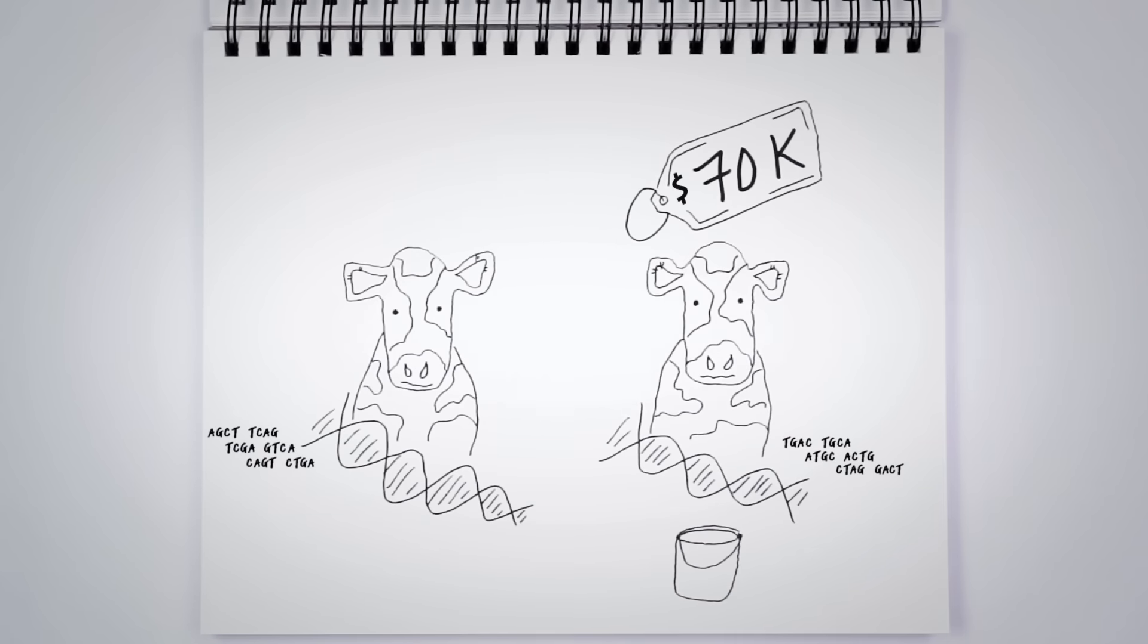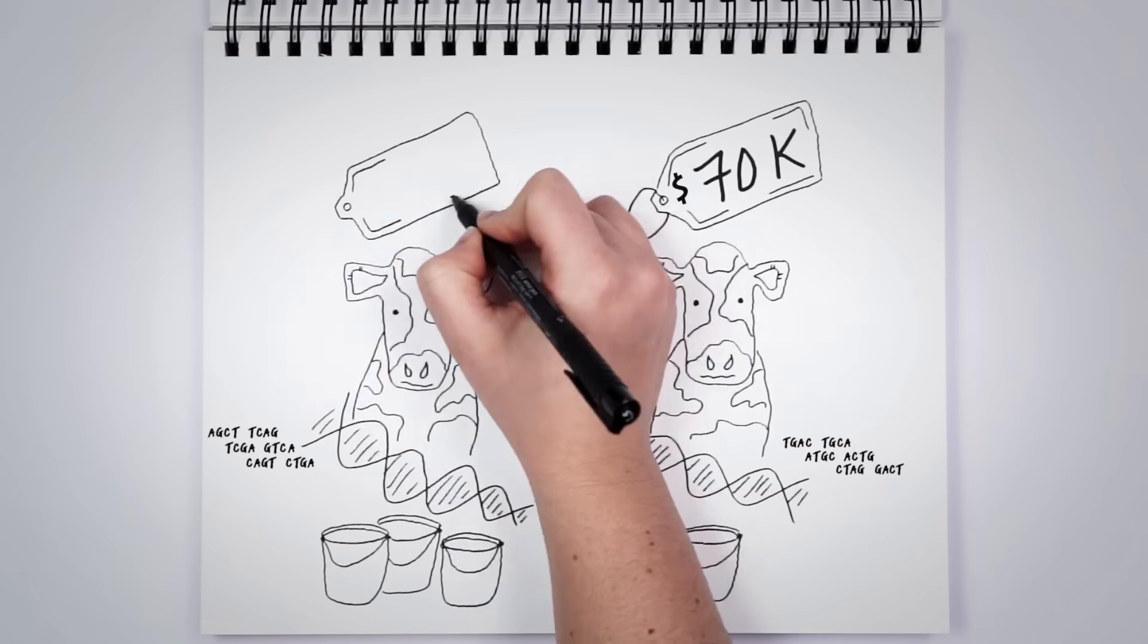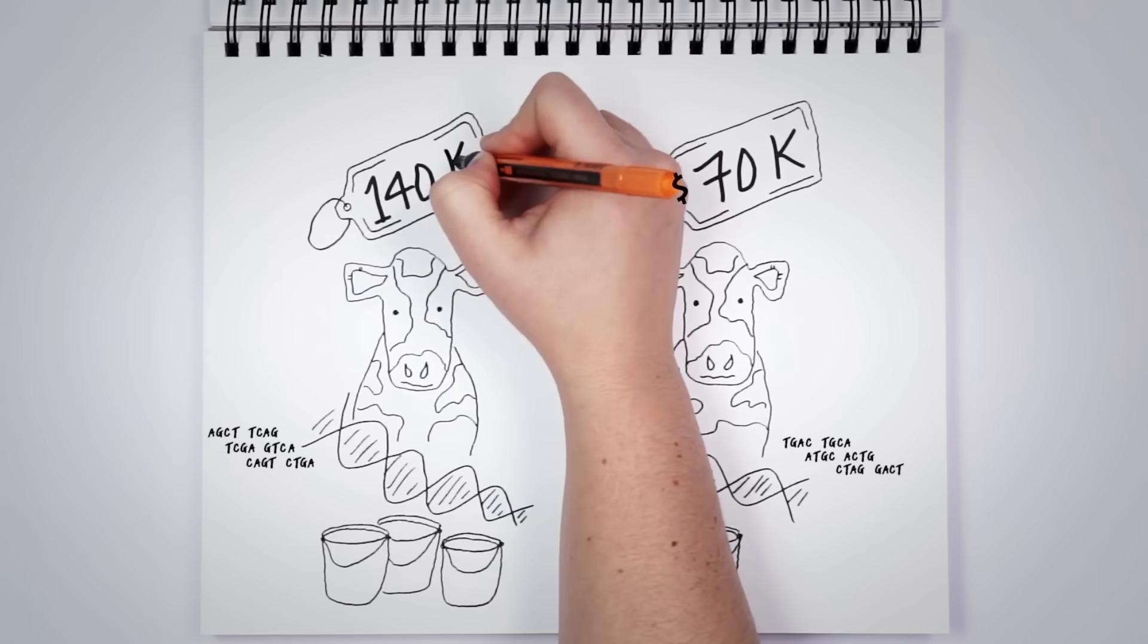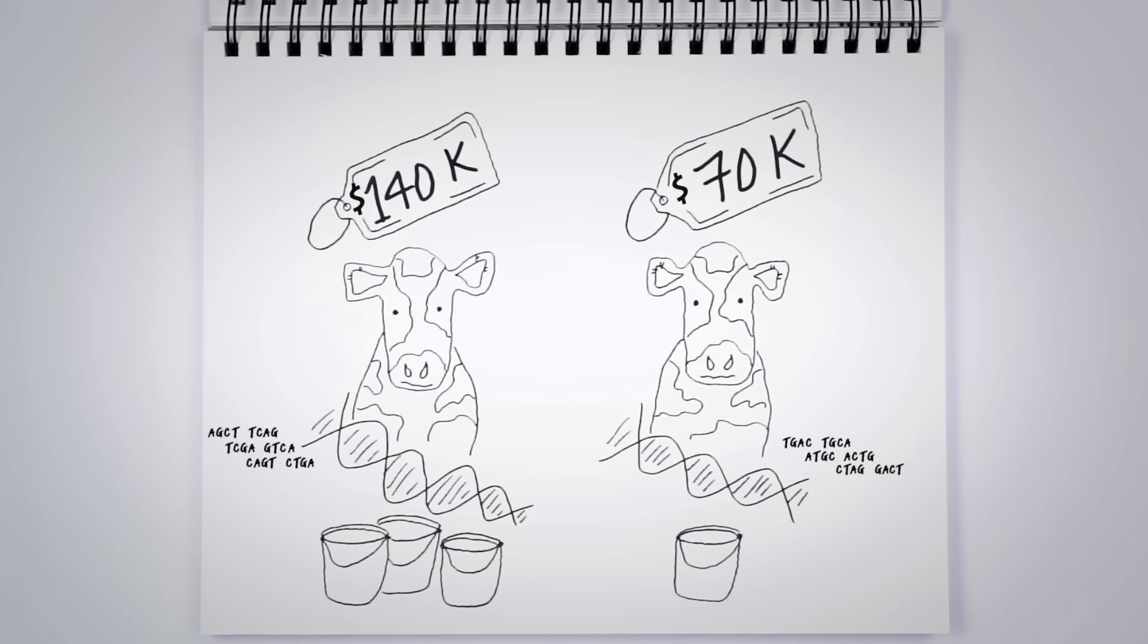Genomics helps producers determine which calves have the genes related to the traits they want. Cows with a higher genomics score produce more milk and demand higher prices at auction, sometimes as much as double.